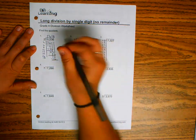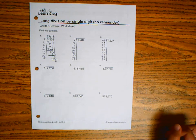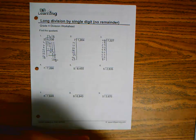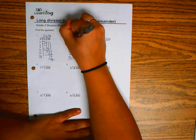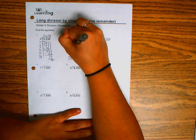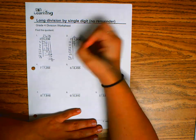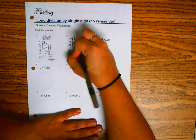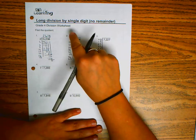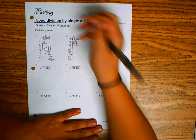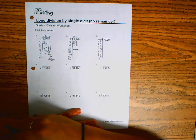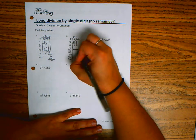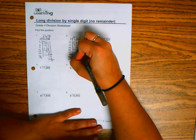Seven cannot go into one, so I'm going to put a zero at the top and subtract. One minus zero is zero, then I bring down the two. Seven can go into twelve one time, and one times seven is seven. I subtract: twelve minus seven is five, and I bring down the zero.